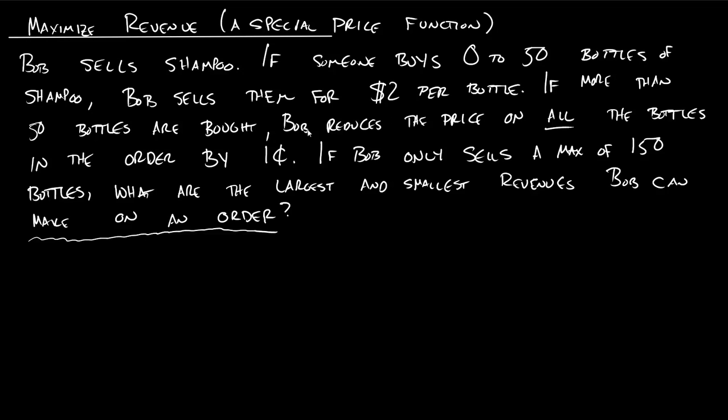But if they buy more than 50 bottles, Bob is going to reduce the price on every single bottle of shampoo they buy by a penny. He's giving them a discount. If Bob only sells a max of 150 bottles, what's the largest and smallest revenues Bob can make on an order? So notice I have these two different pricing rules here. I have a pricing rule for 0 to 50, and I have a pricing rule for 50 to 150. That's really how I'm going to have to break up this problem.